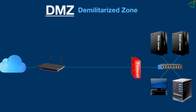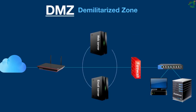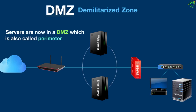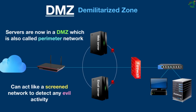However, what if the organization allows public access to web and email servers outside the organization's private network and puts them on the opposite side of a firewall? As you can see, the servers are still in the same area but on the other side of a firewall. So now if people access these servers from the public internet, they are not going to access them behind the organization's internal firewall where the organization's private data is kept. These servers are now front-facing the public internet and completely exposed. This is what a DMZ is all about. These servers are now in a DMZ, which is also called a perimeter network. This network can act like a screen network to detect any malicious activity before it can get behind the firewall and into the organization's private network.